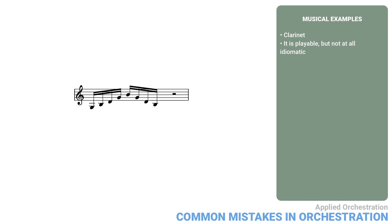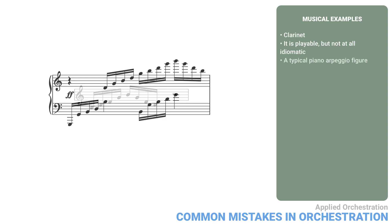One encounters this problem especially when people transcribe music from piano to orchestra. Here's a typical piano arpeggio figure. Attempting to translate this literally for orchestra leads to a disaster. First of all, there are no orchestral instruments with a range this wide, except for the harp.